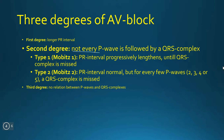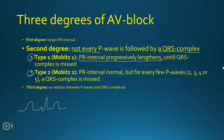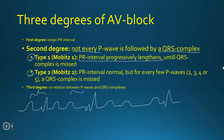Second degree AV block — not every P wave is followed by a QRS complex, and we have two types. Type 1 is where the PR interval progressively lengthens until a QRS complex is missed. So we see: P wave, QRS complex, T wave — P wave, QRS complex, T wave — then a P wave with no QRS complex, another P wave, and a QRS complex. We see lengthening of this interval until we skip a beat. This is type 1, usually the result of something like reversible ischemia or functional damage to the AV node.